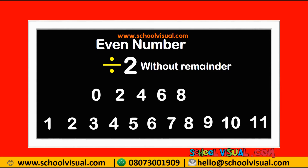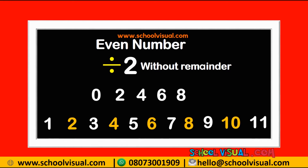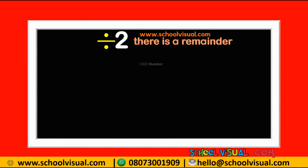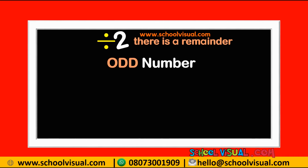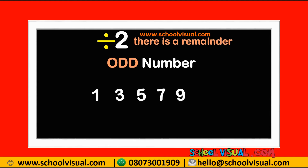Even numbers are always between odd numbers. Now let me tell you what an odd number is. Any number you divide by two and there is a remainder is an odd number. They usually end with one, three, five, seven, and nine. All these numbers are odd numbers — if you divide all these numbers by two, there will be a remainder.